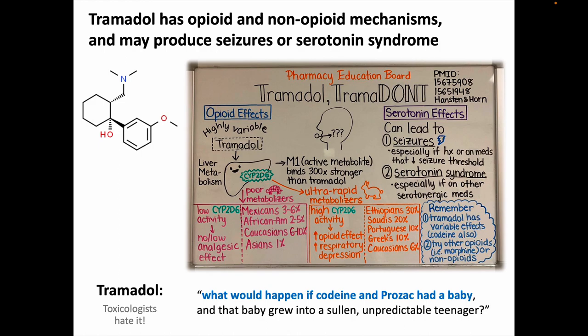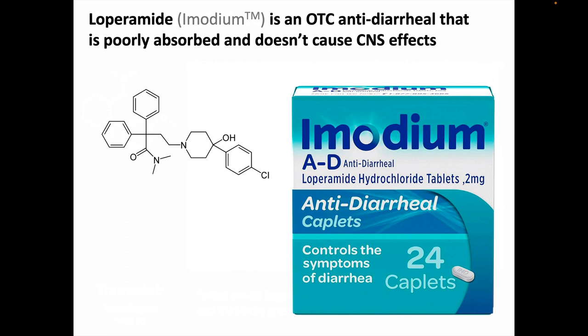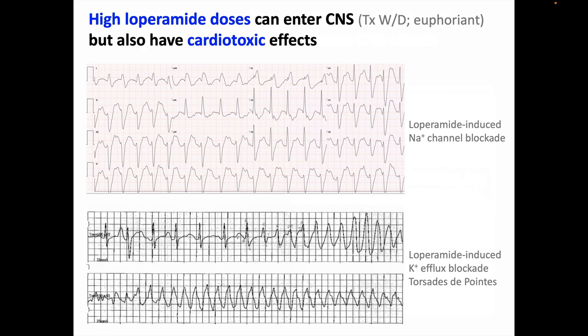Loperamide is an OTC anti-diarrheal drug, and the reason it's available over-the-counter is that at normal doses, it's very poorly absorbed and doesn't have any CNS effects — it only slows down the GI tract. But people have figured out that at high doses, enough loperamide can be absorbed that it does enter the CNS, so it can be used off-label to prevent opioid withdrawal or even as a euphoriant. However, these high doses result in cardiotoxicity. The upper EKG here shows evidence of loperamide-induced sodium channel blockade, and the lower EKG shows loperamide-induced potassium efflux blockade, prolonging the QT interval and producing Torsade de Pointes, polymorphic ventricular tachycardia.